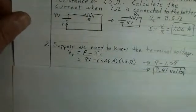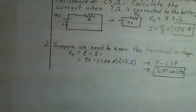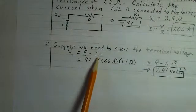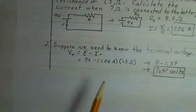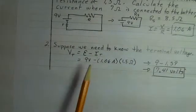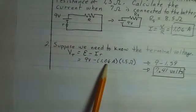If we want to know the terminal voltage, we have to account for the voltage drop inside the battery due to the internal resistance. We've worked out the current. We have our EMF of 9 volts. The current in the battery, 1.06 amps.